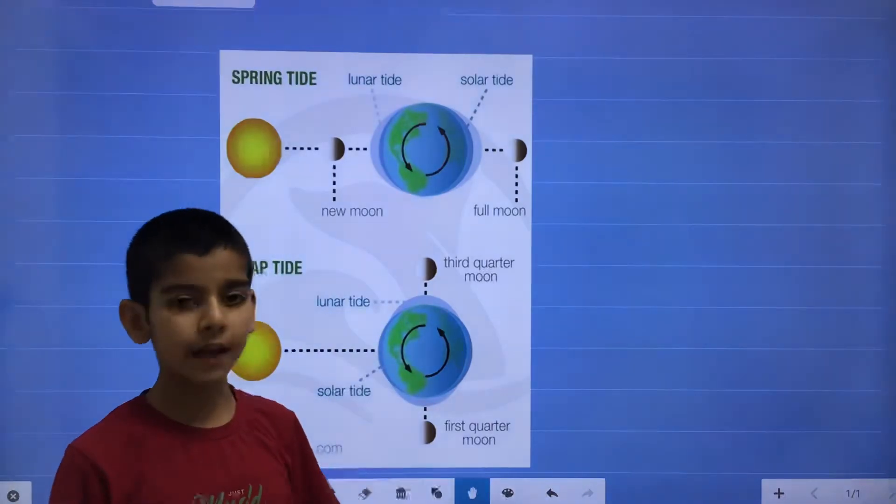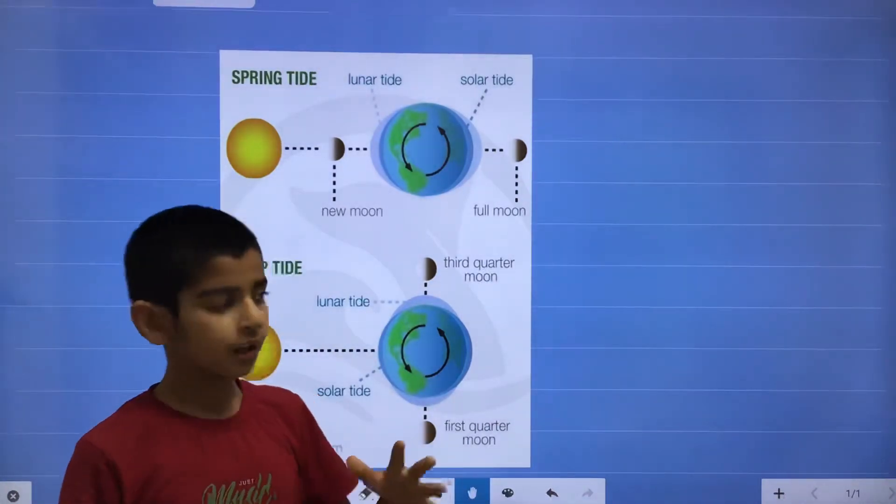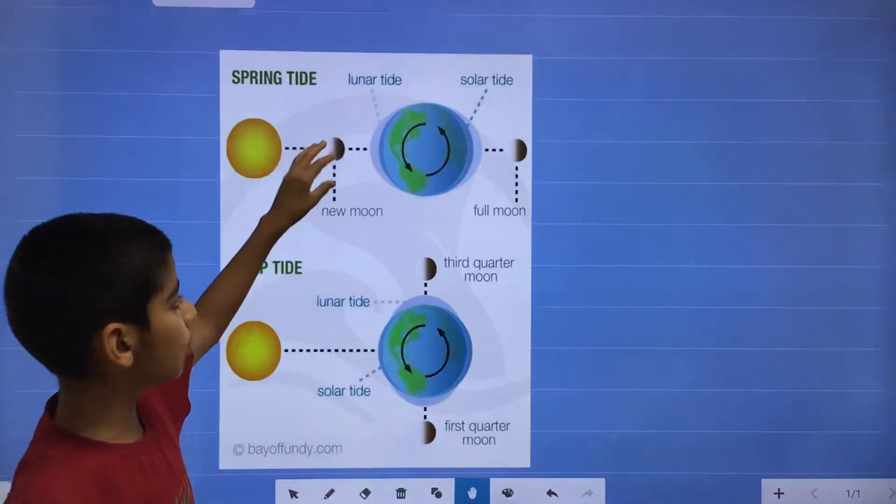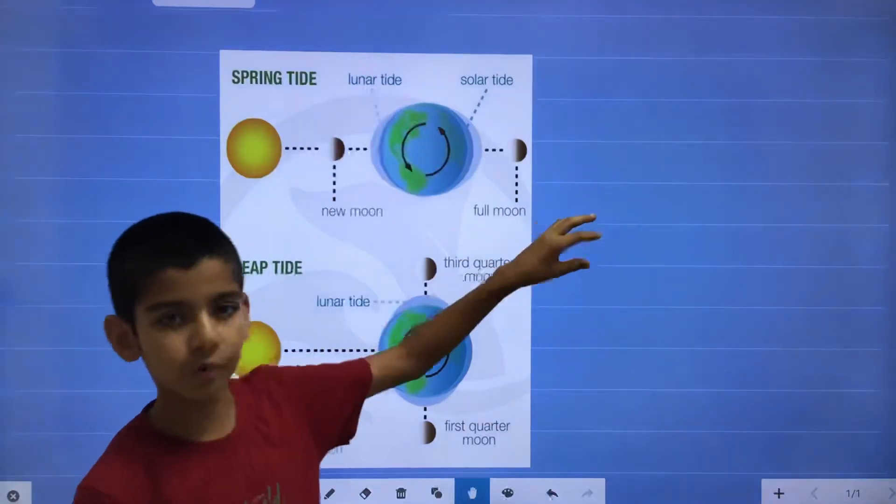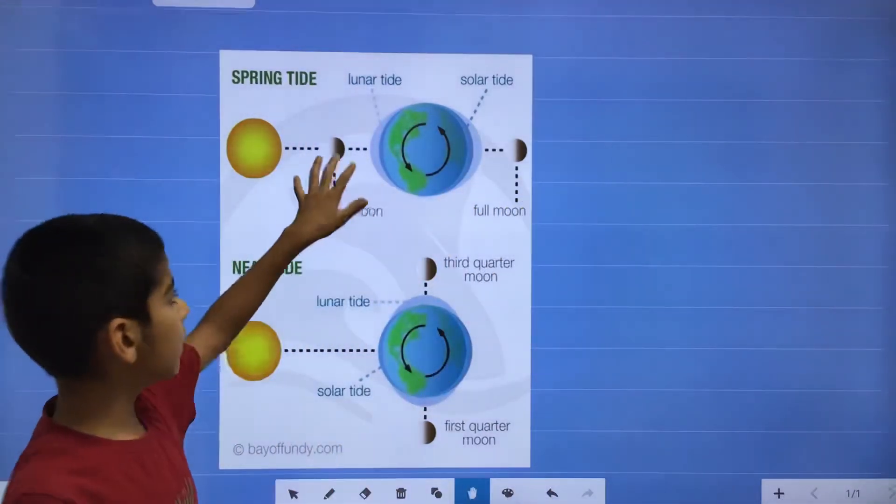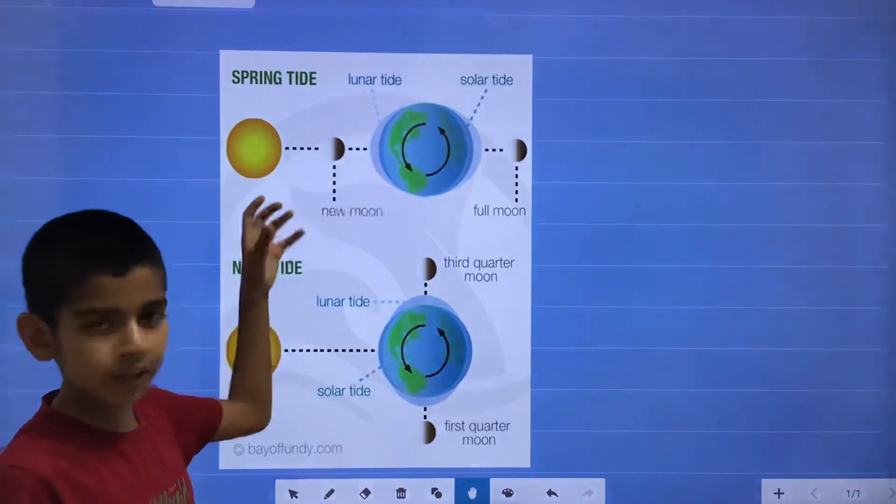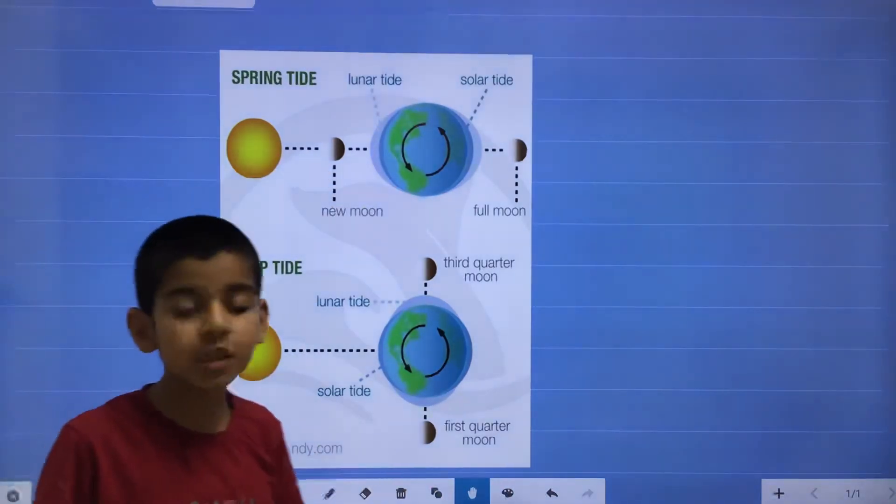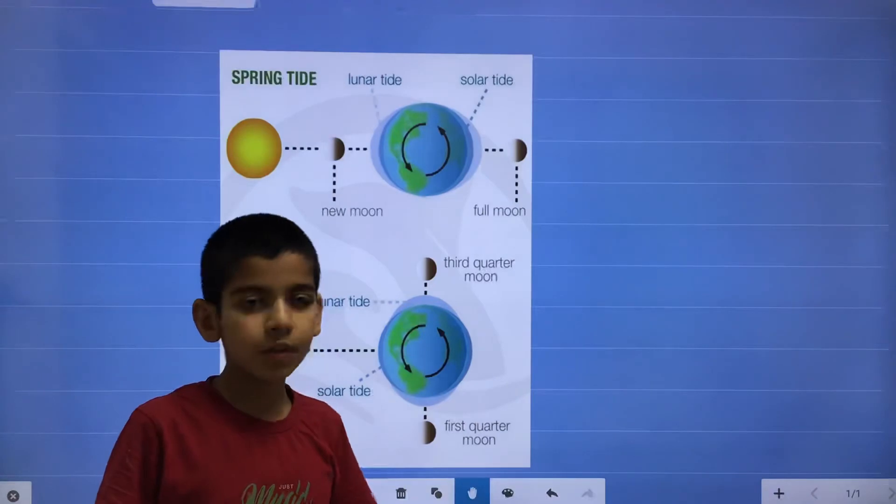So in spring tide, it occurs when it goes at the new moon or the full moon. So the moon and the sun is in the same direction. The gravitational pull will be high. So that will cause high tide.